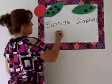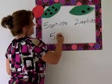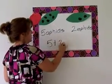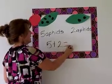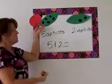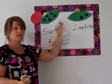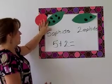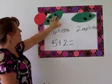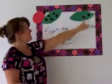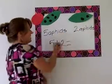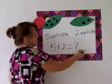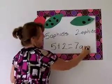So I would make my math problem five plus two equals, and the students can use the aphids on the leaf if they need to help them add them up. And we would count: one, two, three, four, five, six, seven. So five plus two is seven aphids.